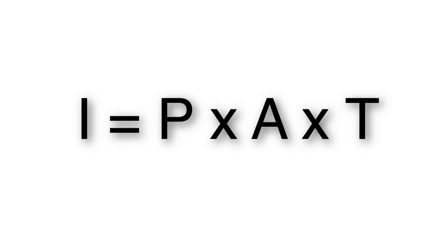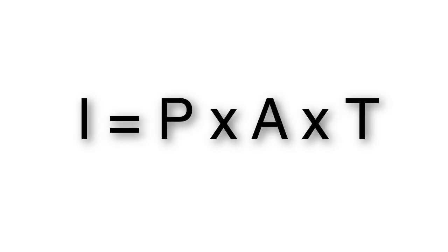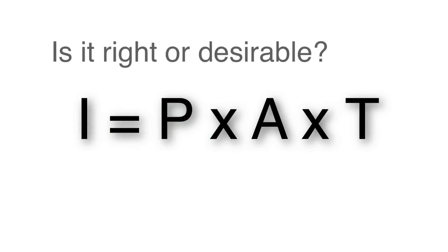A simplified way of strategizing to reduce impact would be to manipulate the terms on the right-hand side of the equation. However, in some cases there are serious ethical considerations in doing this. For example, it is clear that reducing the population would decrease the impact, but manipulating individuals' reproductive rights or deciding to end the lives of people are serious moral infractions.